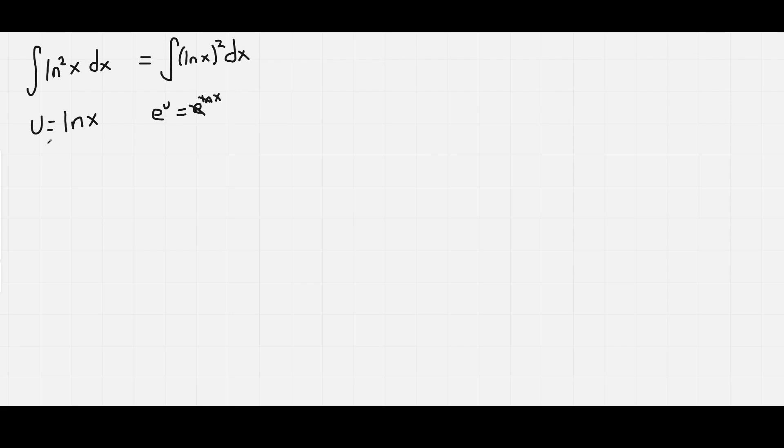Now du, that is going to be the derivative of ln x, which is 1 over x dx. If we multiply both sides by x, we get x over x here, which will cancel itself out, leaving dx by itself. We'll get x du, so dx equals x du.